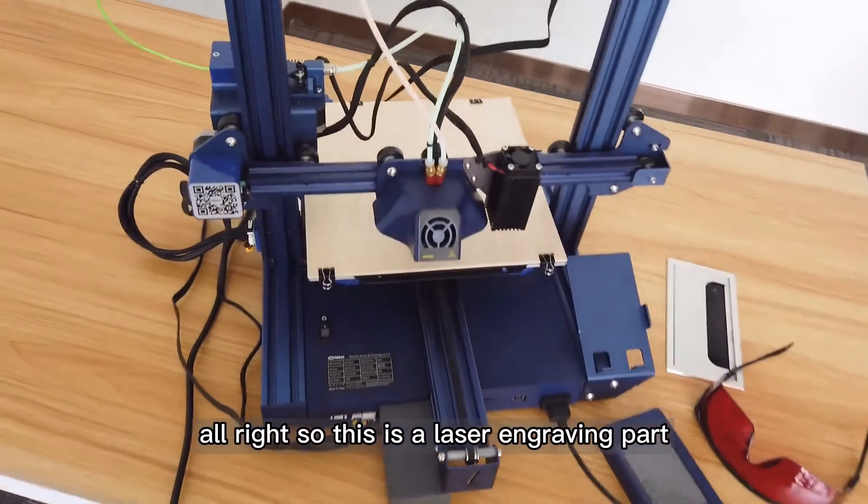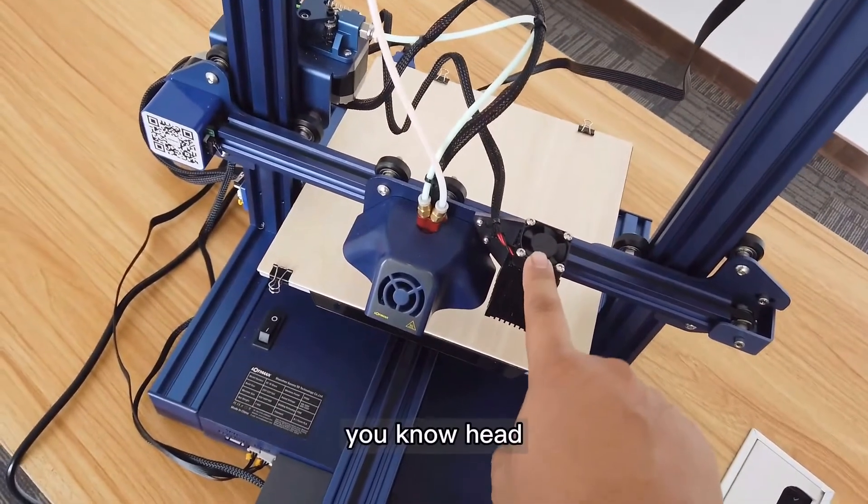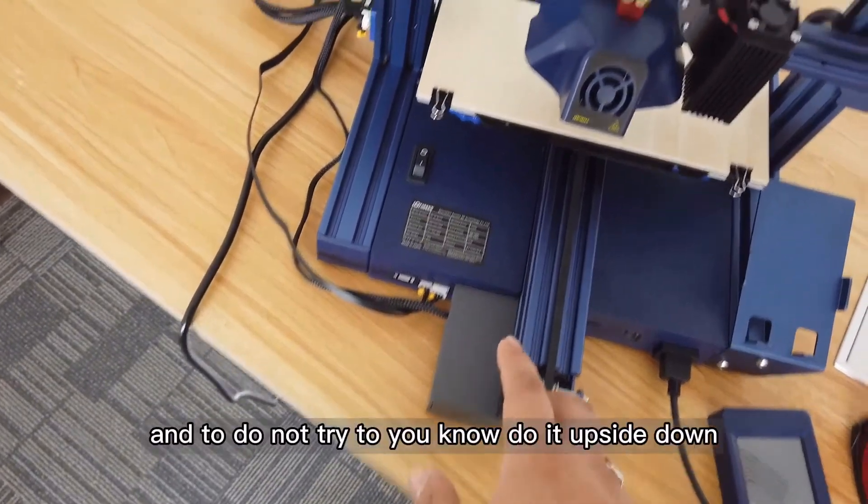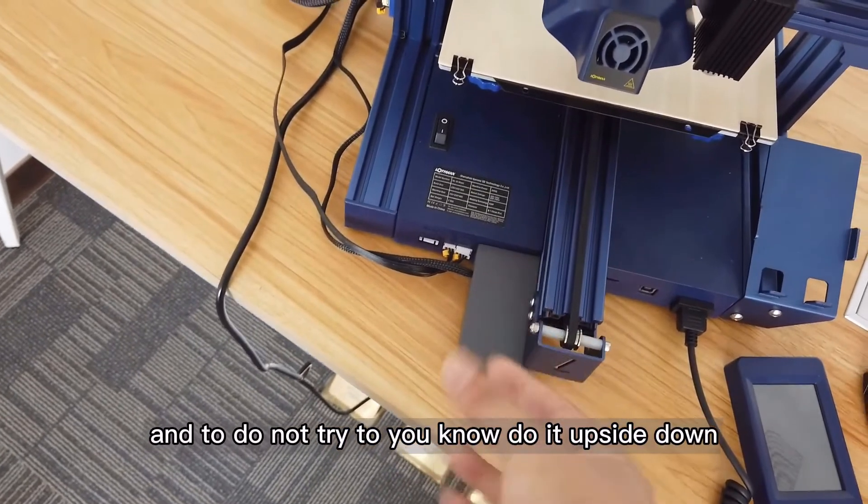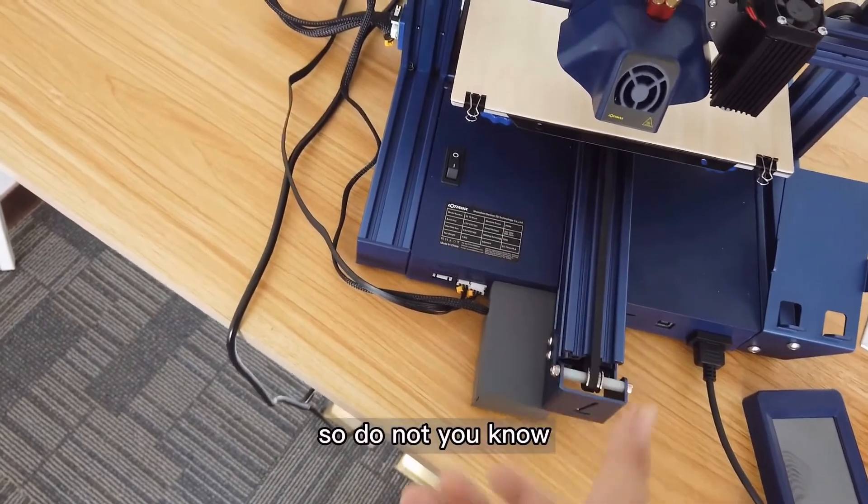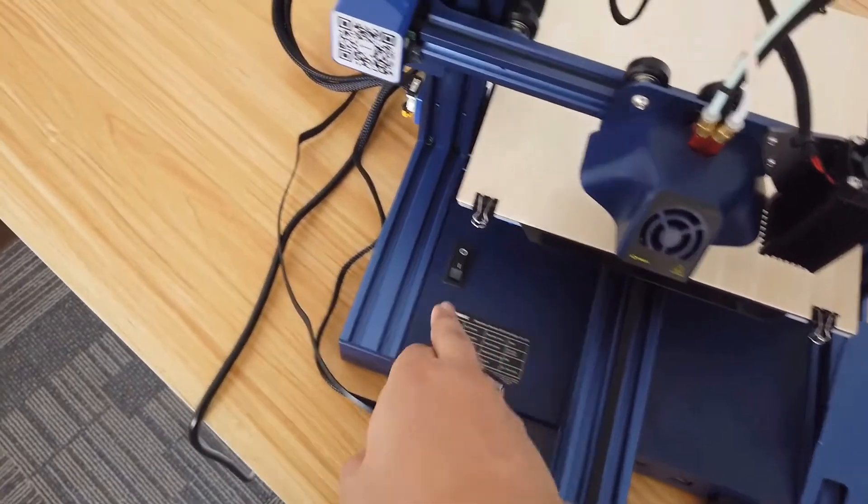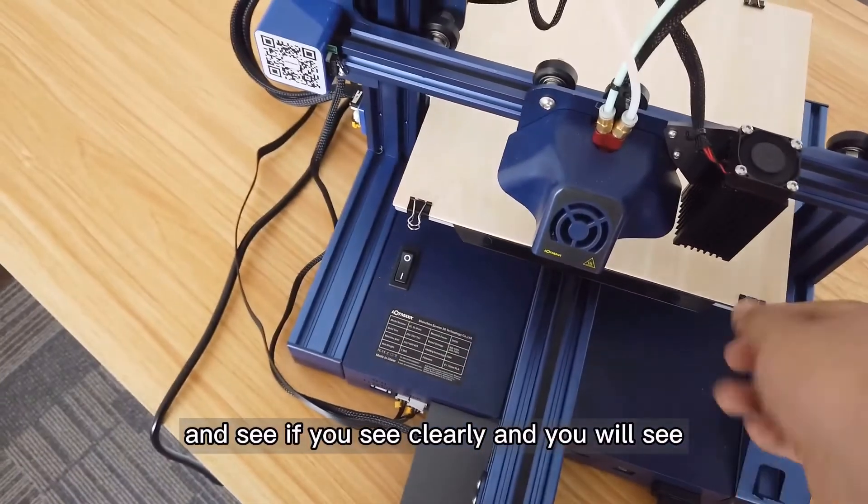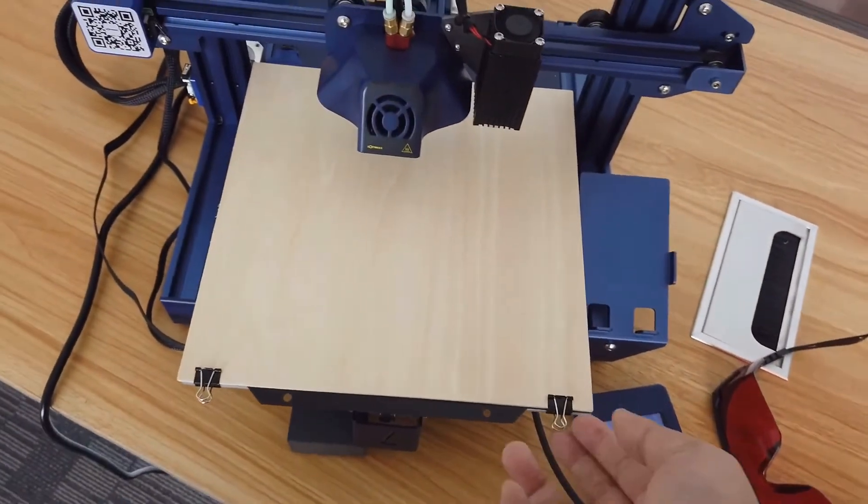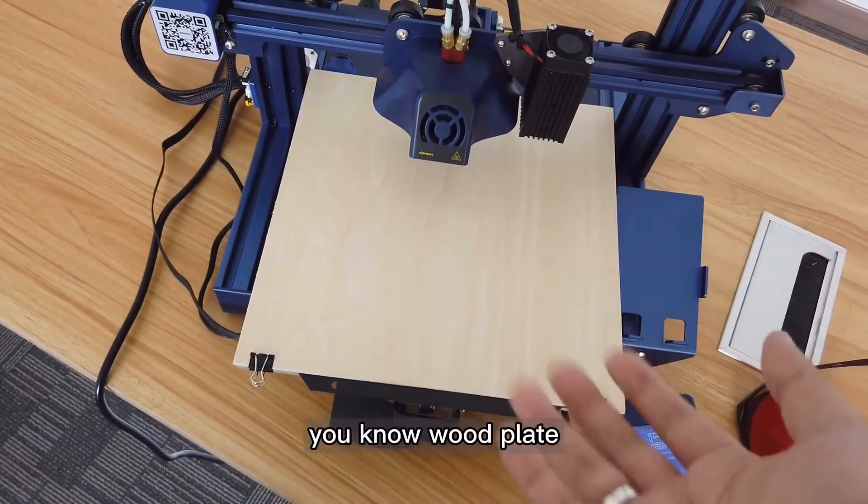This is the laser engraving part. As you can see we actually installed this head. This is the box and laser engraving box. Do not try to do it upside down, and at the same time it doesn't support hot swap. Do not plug in or plug out with power on. Right now it's power off, I'm going to power it on. I have used clips to place this wood plate.